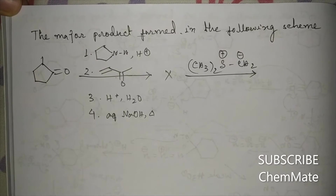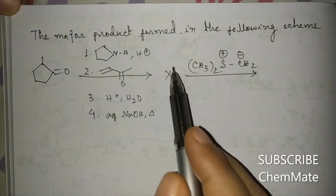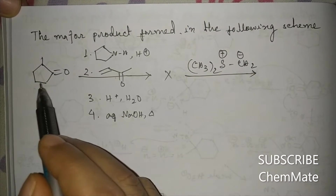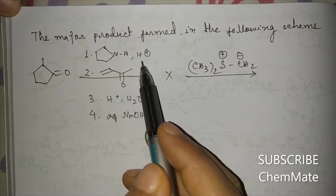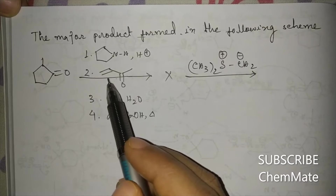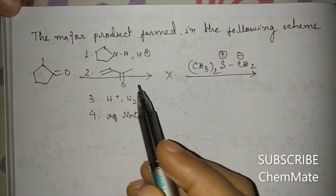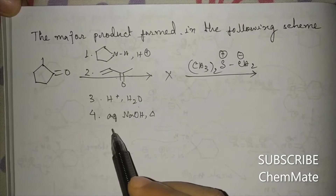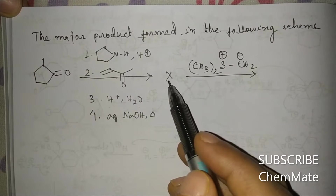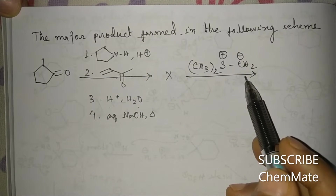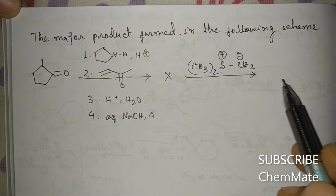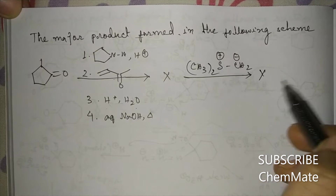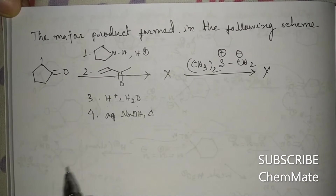Hi guys, we are discussing a GATE 2018 question. The reaction scheme involves a five-membered cyclic ketone and pyrrolidine in the presence of acid, then an alpha-beta unsaturated ketone, then H3O+. We have to identify product X, and then with a sulfonium ylide, identify product Y.